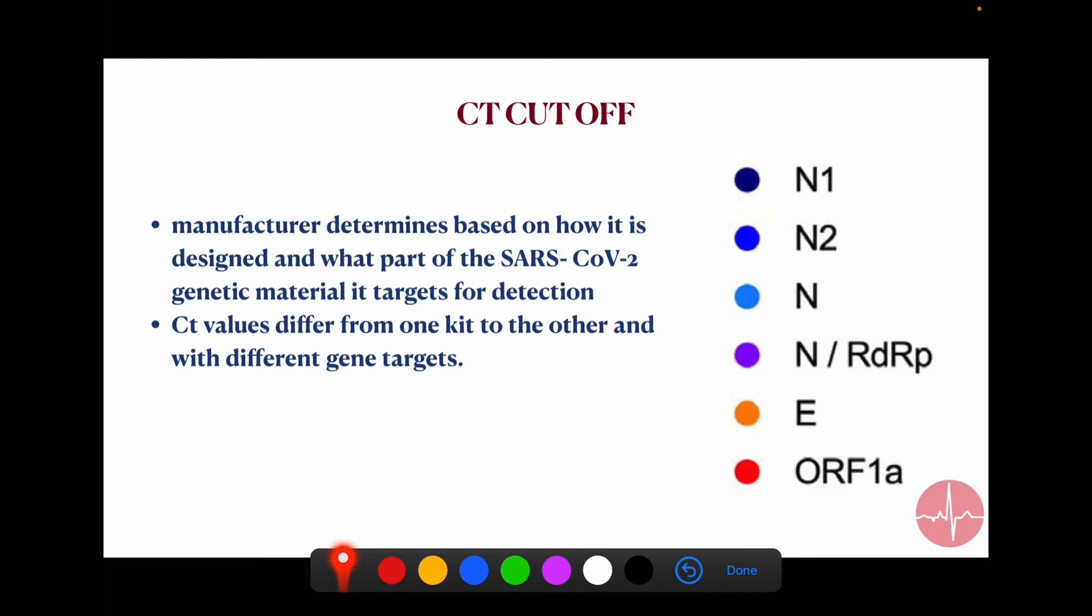And how do we decide the CT cutoff value? It is determined by the manufacturer of the PCR kit, and it decides based on how it is designed and what part of the viral material it targets.